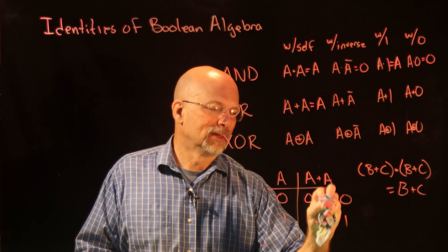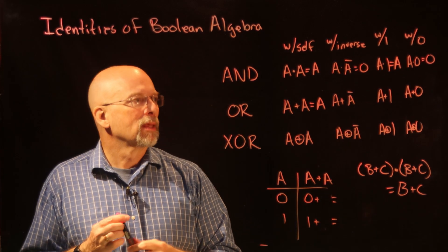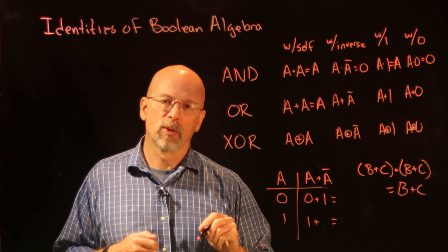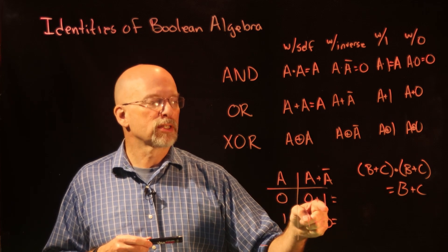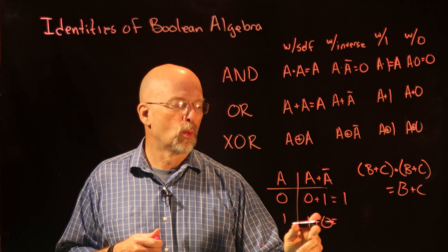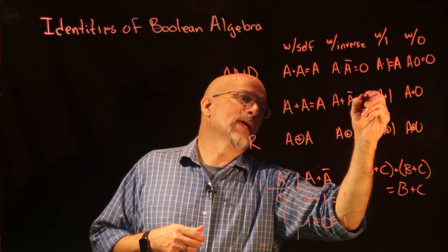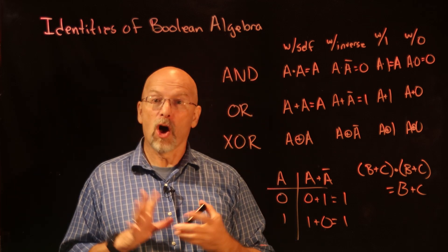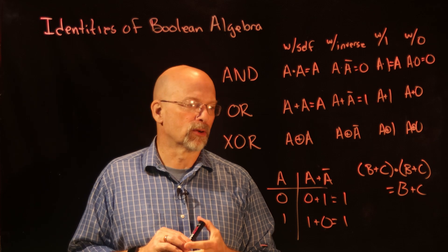Anything ORed with its inverse: when a is 0, its inverse is 1, so 0 OR 1 equals 1. When a is 1, its inverse is 0, so 1 OR 0 equals 1. Regardless of what a is equal to, when you OR it with its inverse, it's always equal to 1.